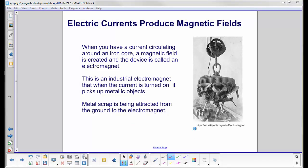When you have a current circulating around an iron core, you create a magnetic field, and that device is called an electromagnet. When you turn the current off, it is no longer a magnet.